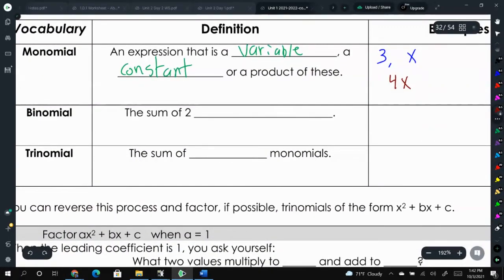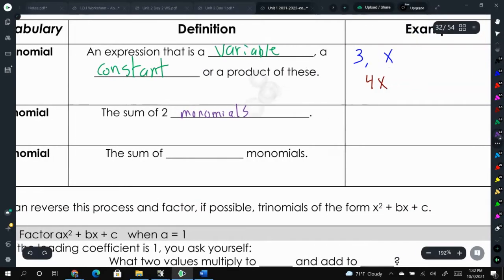A binomial is the sum of two monomials, so we would say there are two terms. x plus 5 is a binomial. There's two terms. We could even go x squared plus 3x, that's another binomial.